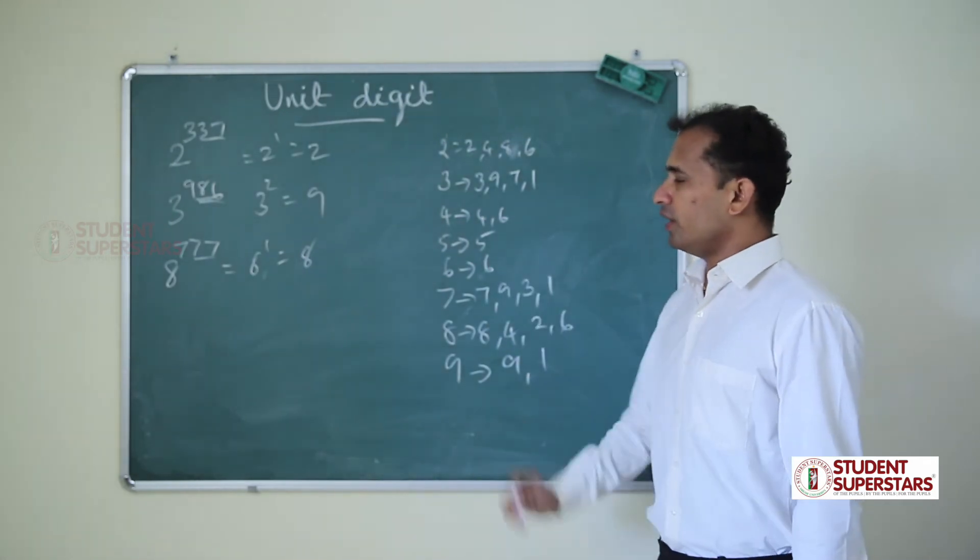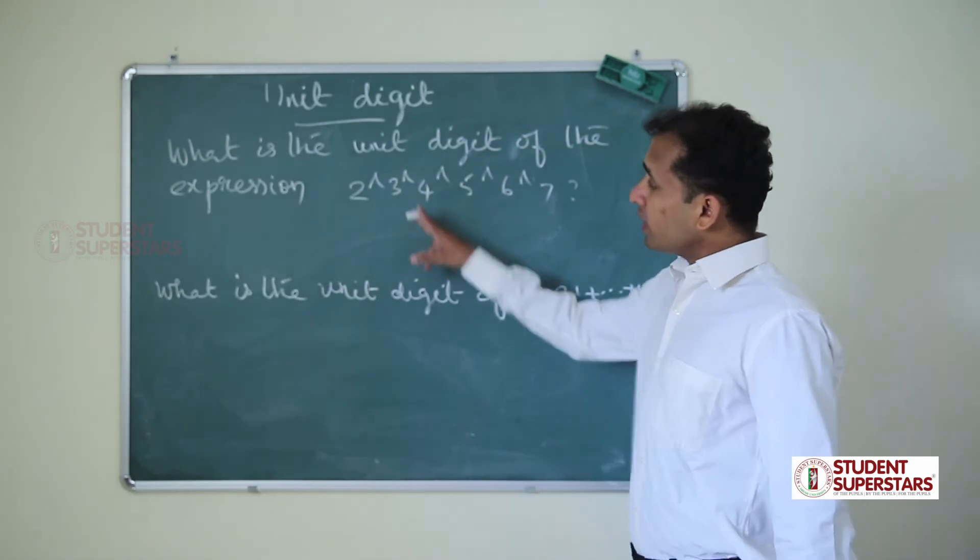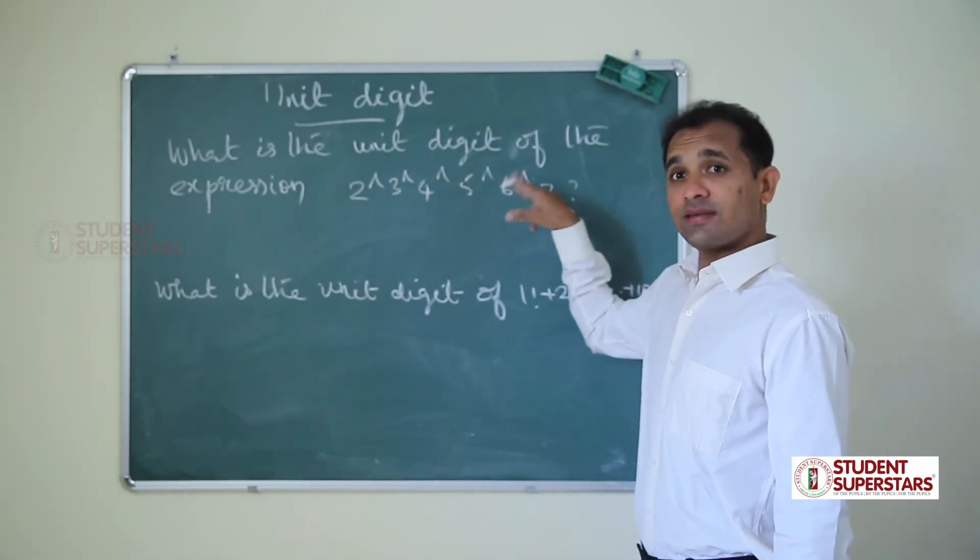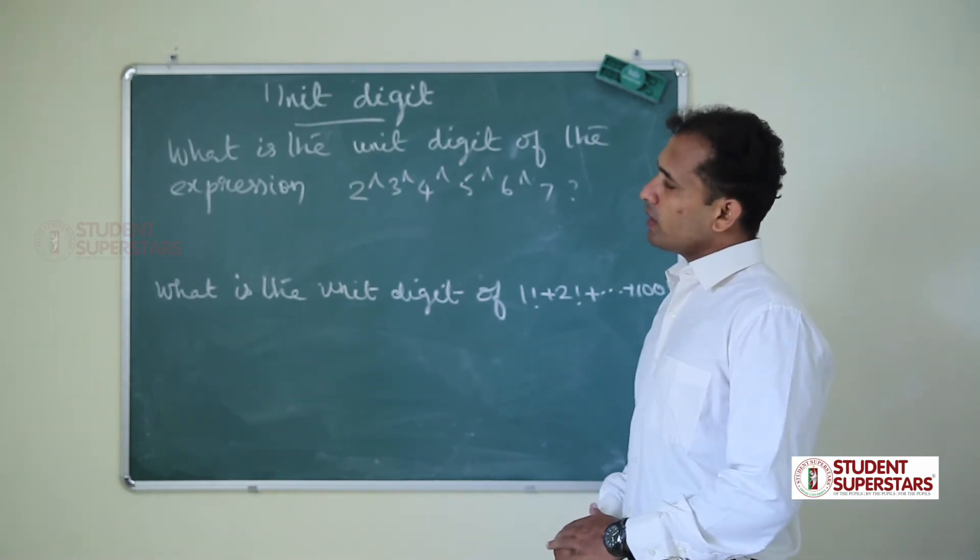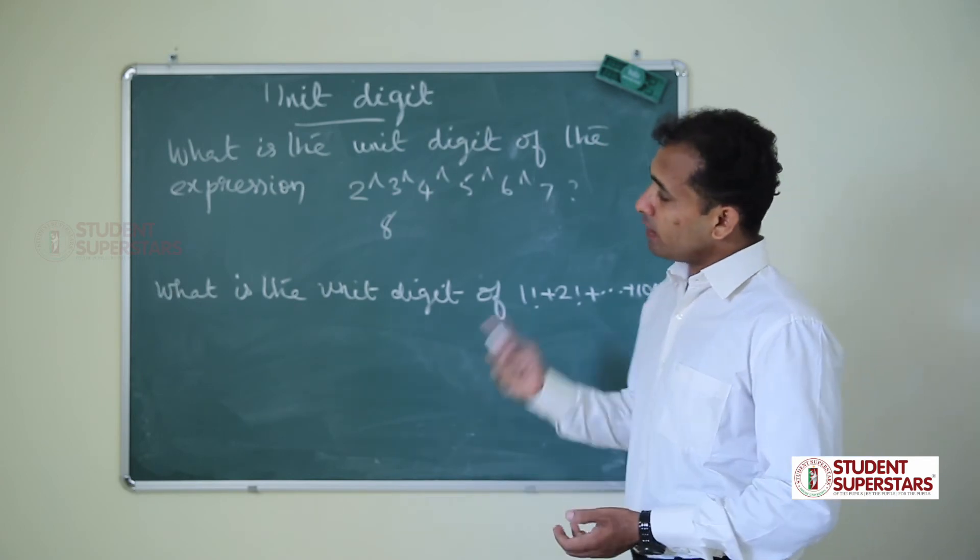Clear? So this is unit digit. What is the unit digit of the expression 2 power 3, power 4, power 5, power 6, power 7? So 2 power 3 is 8.